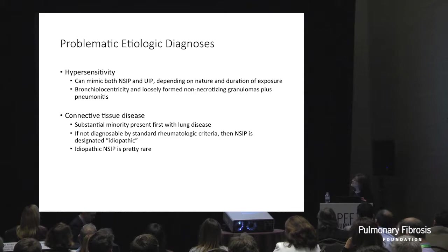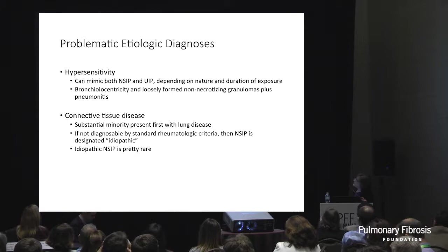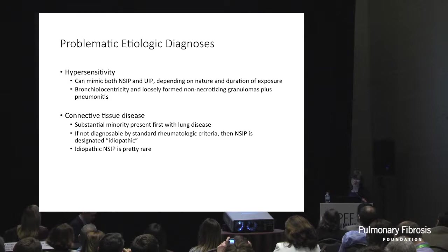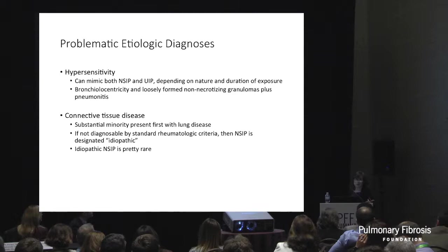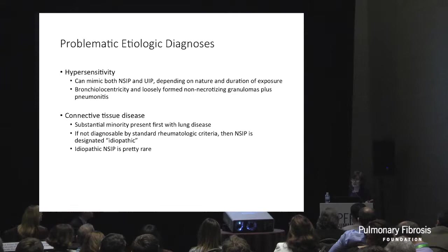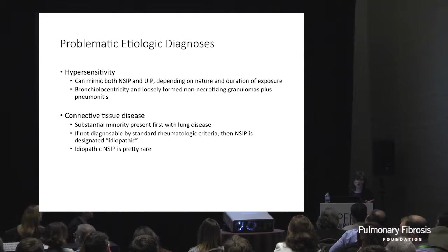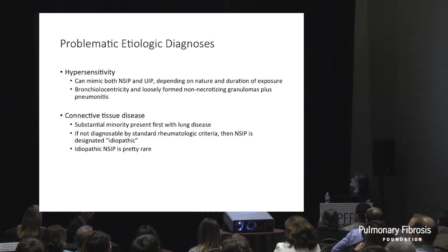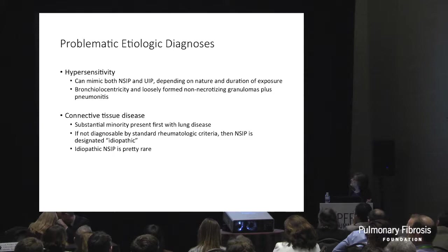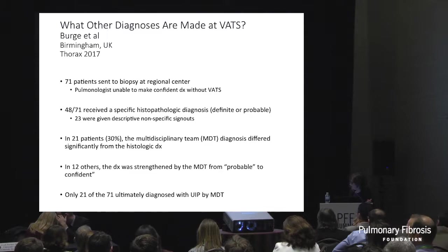Hypersensitivity is a problem for the pathologist — it can mimic NSIP and UIP depending on the antigen, the duration of exposure, and whether exposure is intermittent. The classic pathologic pattern is granulomas next to the airway, interstitial pneumonitis, and edema and granulation tissue in the bronchiolar lumen. It's very uncommon to have all three unless there's been recent intense exposure. As it resolves, you're often left with a patchy interstitial infiltrate that is not specific for anything. If you have a big enough biopsy to assess bronchiolocentricity, that can be helpful, but once chronic, the scarring often extends beyond the airway and becomes difficult to distinguish from idiopathic disease.